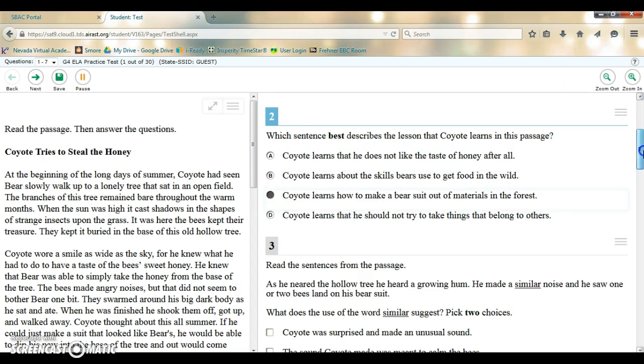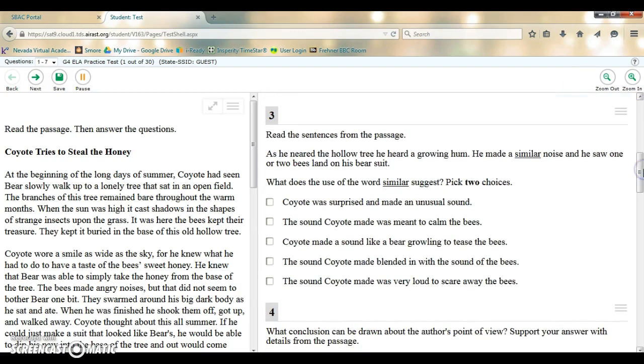The third type of response will be multiple correct answers. So you can see in this question it asks you to pick two choices. You'll do that by clicking on the checkbox of the two choices that you'd like.